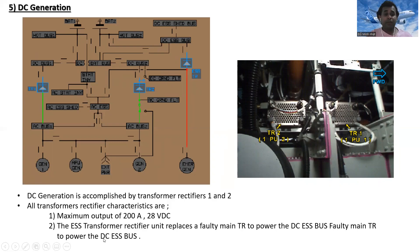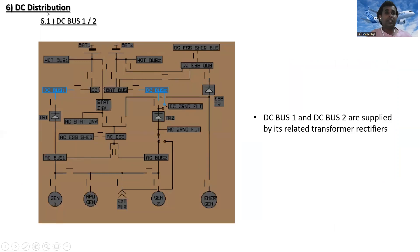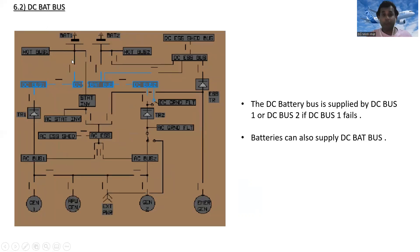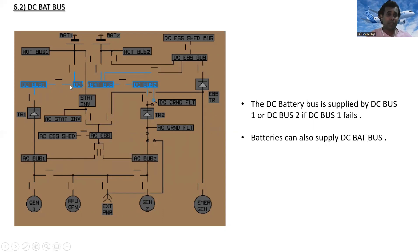For DC distribution, DC bus one and DC bus two are each supplied by their related transformer rectifier — DC bus one by transformer rectifier one, and DC bus two by transformer rectifier two. The DC battery bus is normally supplied by DC bus one, or by DC bus two if DC bus one fails. Batteries can also supply the DC battery bus.